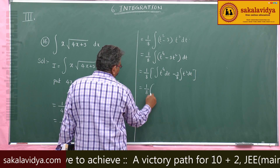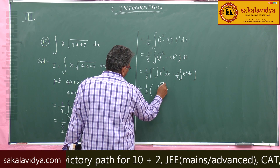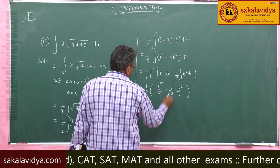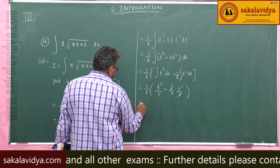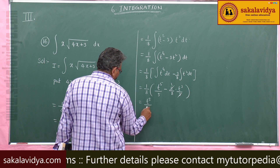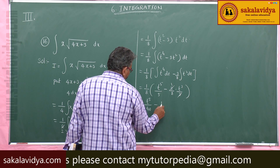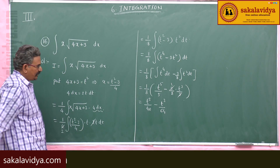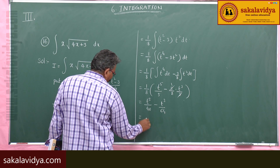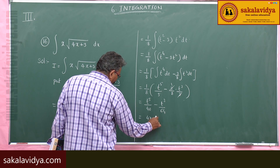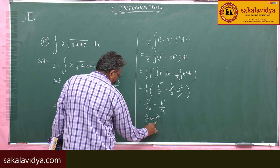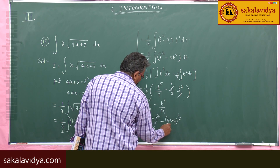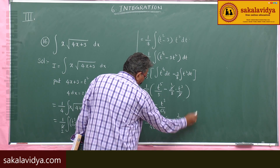Integrating: 1/8 · t⁵ by 5 minus 3/8 · t³ by 3. The 3s cancel, giving t⁵/40 minus t³/8. Since t equals √(4x+3), the final answer is (4x+3)^(5/2) by 40 minus (4x+3)^(3/2) by 8 plus constant of integration.